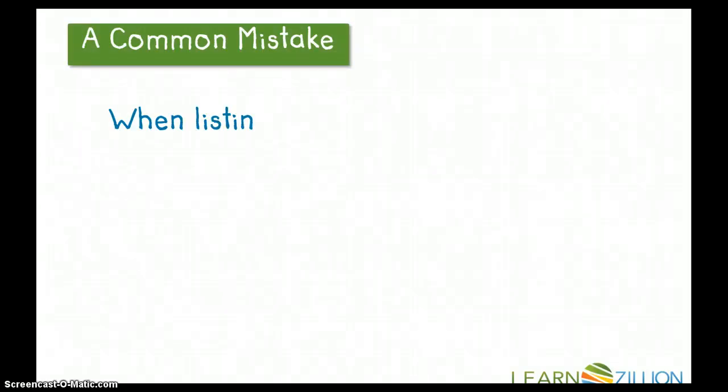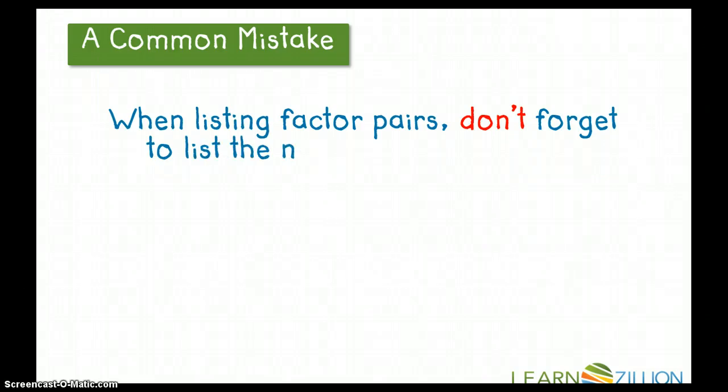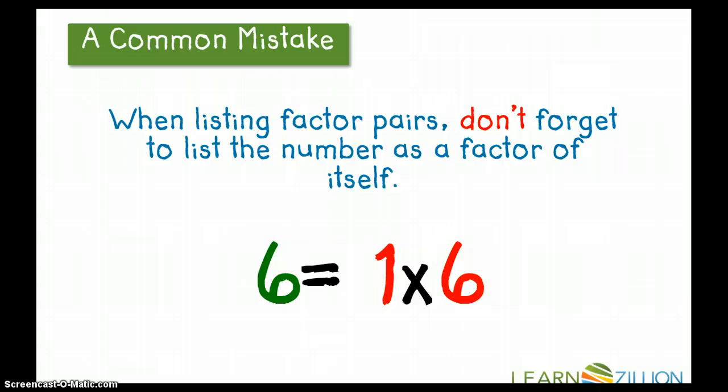A common mistake that many students make when listing factor pairs: don't forget to list the number as a factor of itself. Six is a factor of itself, because one times six equals six. One and six are factors of six.